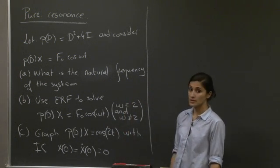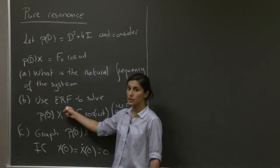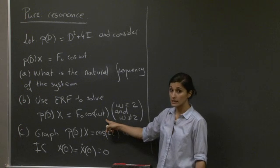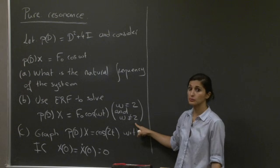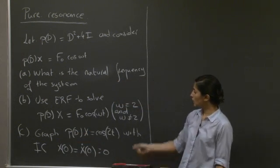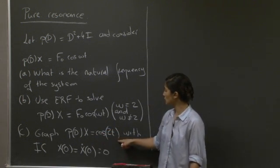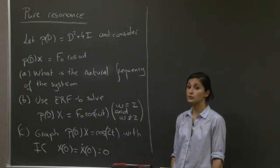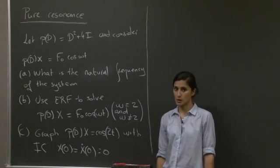So the first question is, what is the natural frequency of the system? The second one is to use the exponential response formula to solve for pd equals f0 cos omega t. And here you need to be careful and do it for both cases, omega equals 2 and omega not equal to 2. And the last question is just to sketch the graph for the response of this system, pd equals cos 2t, with initial conditions x of 0 and x dot of 0 equals 0, basically rest initial conditions. So why don't you pause the video, take a few minutes, and work through this problem.